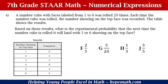Let's look at our table and the results — numbers showing on top face and their frequency. For 1, the frequency is 0; for 2, the frequency is 3; for 3, the frequency is 3; for 4, the frequency is 6; for 5, the frequency is 3; and for 6, the frequency is 5.